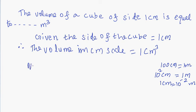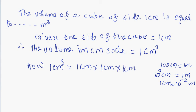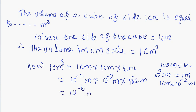Now, 1 centimeter cube is equal to 1 centimeter into 1 centimeter into 1 centimeter. Substituting centimeter in meter, this is equal to 10 to the power of minus 2 meter, into 10 to the power of minus 2 meter, into 10 to the power of minus 2 meter, which is equal to 10 to the power of minus 6 meter cube. So the answer is 10 to the power of minus 6 meter cube.